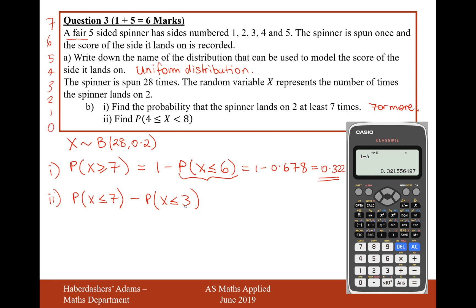And then when I do the subtraction, I'm just going to subtract this bit here. And that will leave me with the probability of scoring 7, 6, 5, or 4 times of scoring a 2 on the dice.